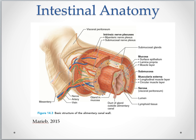If you'll recall, the four main layers of the intestine from the outside in are the serosa, then the muscularis externa, then the submucosa, and then the mucosa layer, which contains the surface epithelium. The hollow part of the intestine is called the lumen.